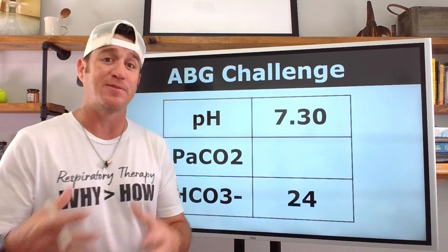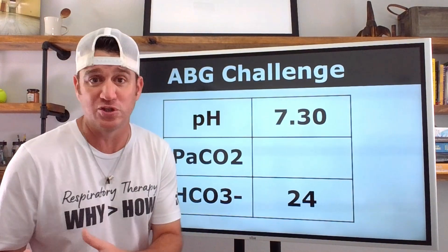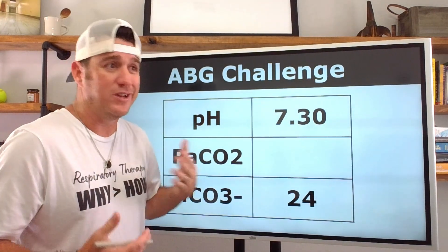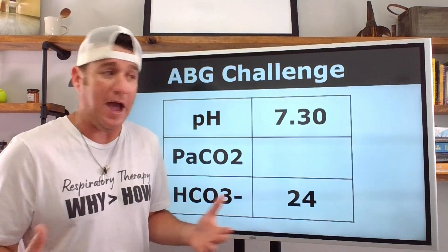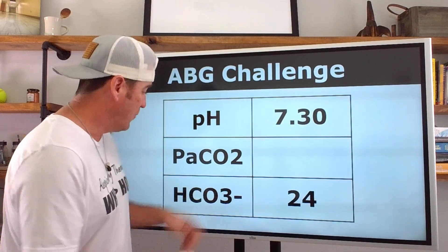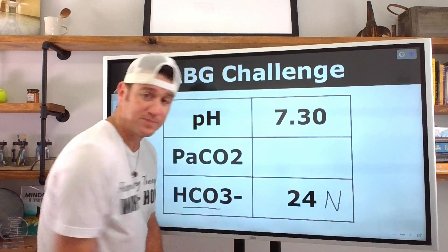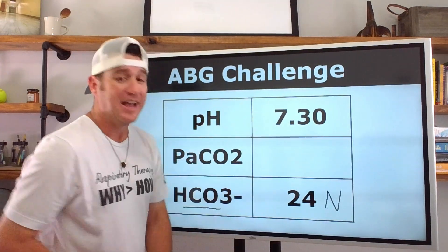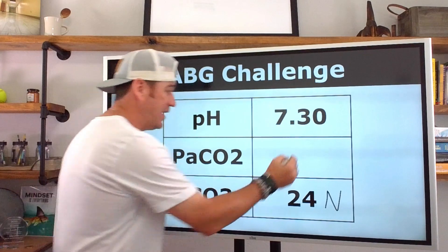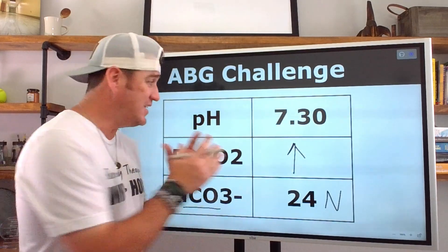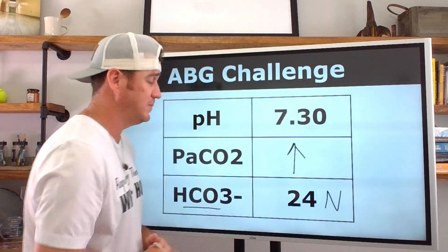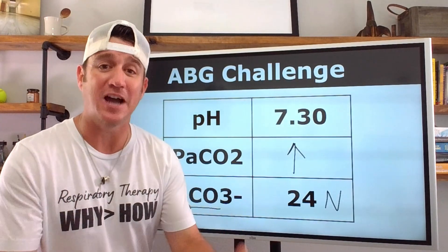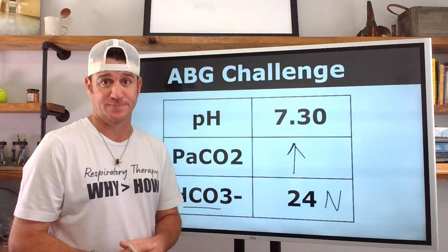You might ask: is it respiratory or metabolic? We don't know our CO2 value. But we do know our bicarb is normal. If the bicarb is normal, there's only one component left causing the acidosis — and that has to be the arterial CO2. So we know we have a high CO2 causing an acidotic pH with a normal bicarb. This is an uncompensated respiratory acidosis — that's the only thing it can be.